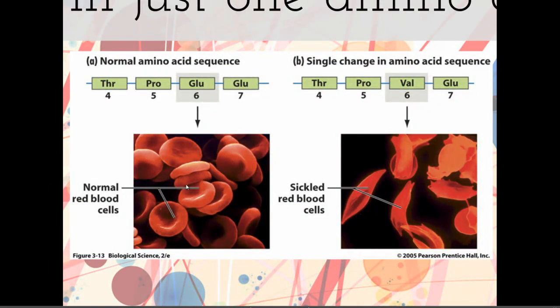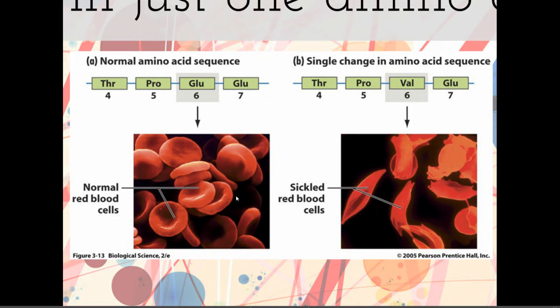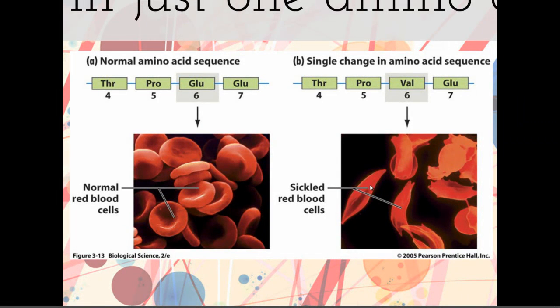Here you can see normal healthy red blood cells. Here are these sickle shaped red blood cells, and this gets its name, the disease gets its name from this shape. Notice out of 148 we have a change in just one amino acid, but that changes that overall shape enough that you end up with this disease. We can see if you change the structure of a protein, you're going to change the function of the protein.